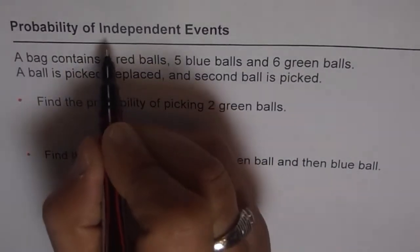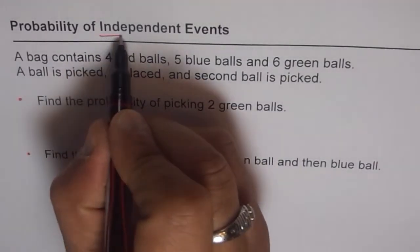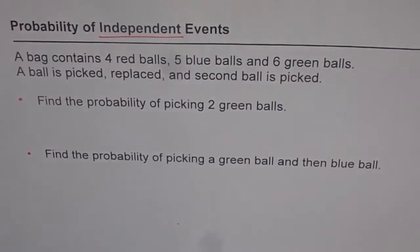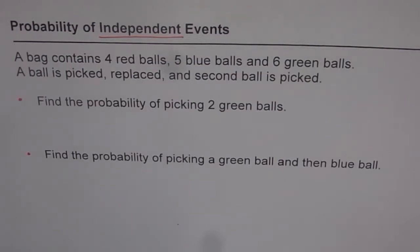So what does independent mean? Independent means that when the first thing happens, the second thing can happen in the same way — as if the first has no effect on it. When the two events do not influence the outcome of one another, they are independent events.